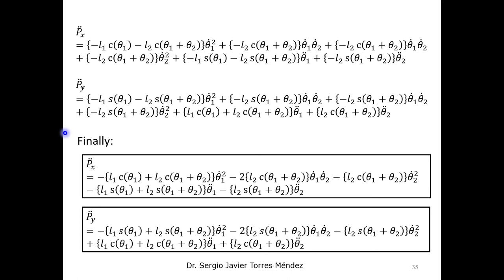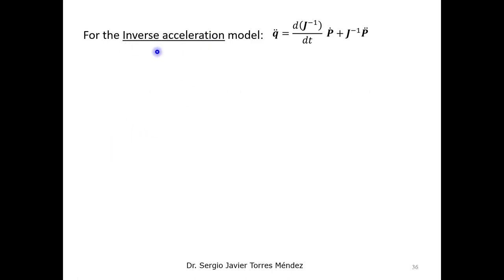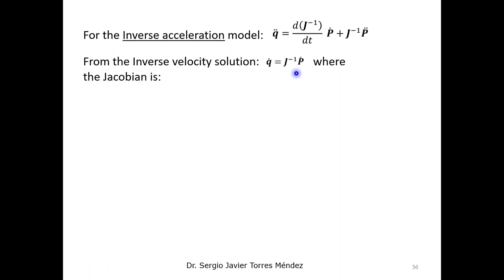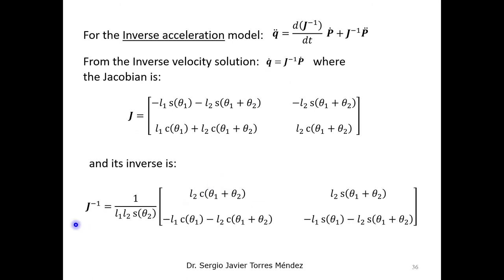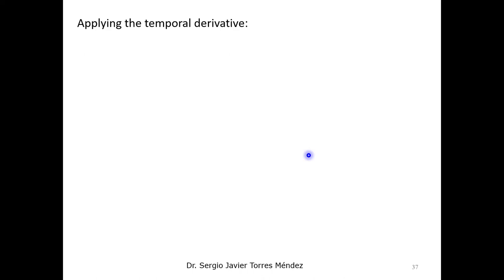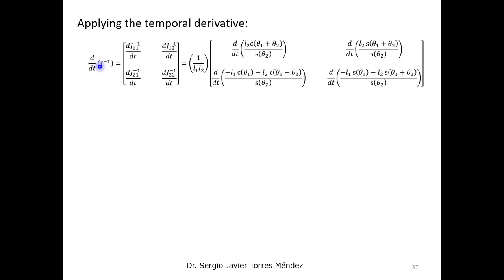Now for the inverse acceleration problem, we are going to use our formulation that is based on the inverse Jacobian matrix. When we solve the inverse velocity problem, we already use the Jacobian matrix, and then we need to obtain the inverse Jacobian matrix. Now for the acceleration problem, we need to apply the temporal derivatives, similar to the Jacobian matrix derivatives.